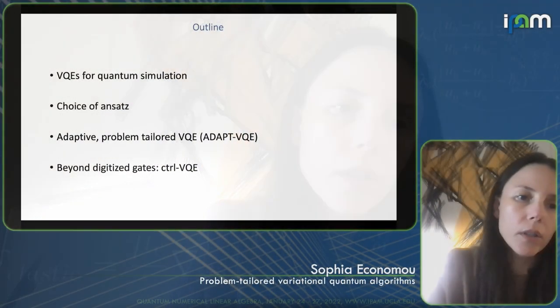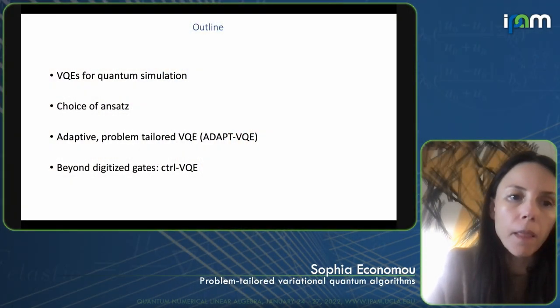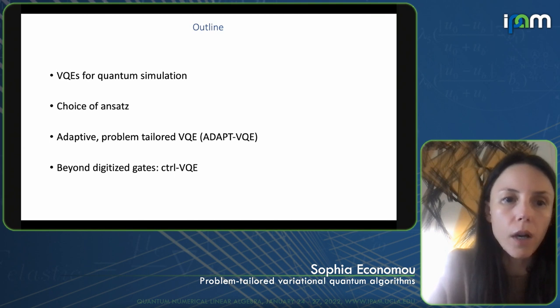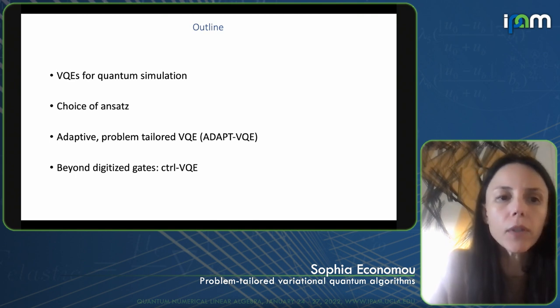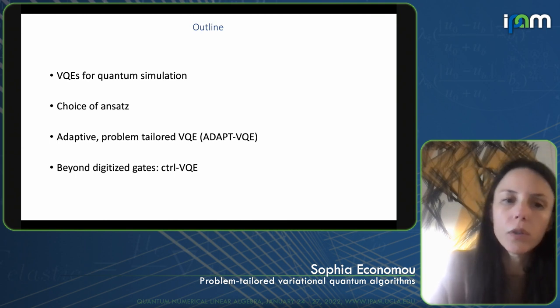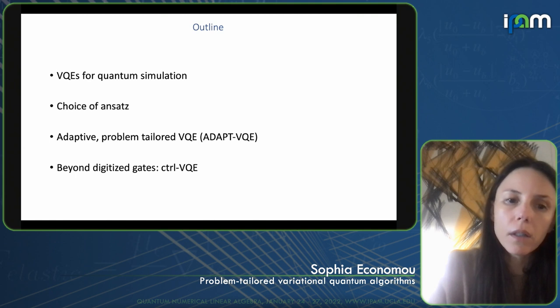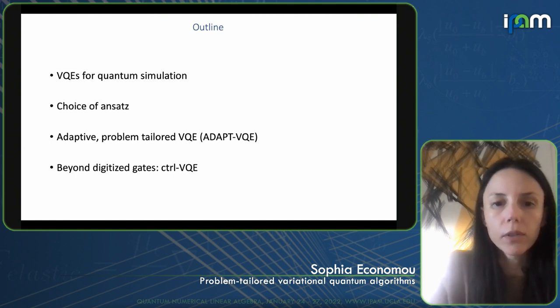What I'll focus on today is variational quantum eigensolvers. This morning you heard about this class of algorithms that we envision solving on more near-term quantum computers. I'll specifically narrow down and focus on the choice of ansatz, what constitutes a good ansatz and how we find one, and then I'll answer that question with our work on adaptive problem-tailored ansatz.